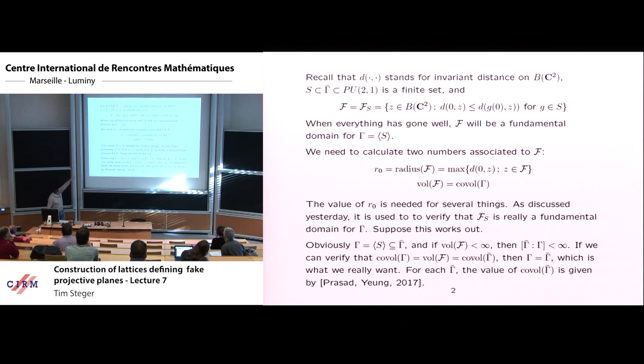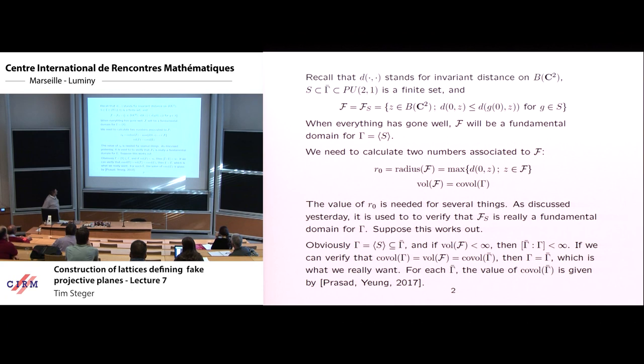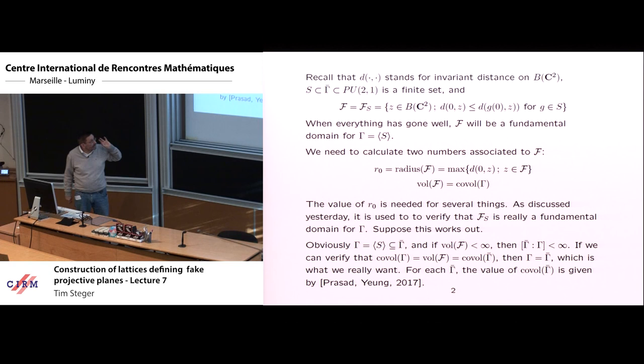First, its radius measured from the origin — it's a Dirichlet fundamental domain based at the origin, so that's the reasonable thing — and second, its volume. Its volume is what would be called the co-volume of gamma. That's very close to the definition of co-volume. That radius is needed for several things, but as I explained in the previous lecture, you need it to be sure that your group is really discrete and that F really is a fundamental domain for gamma.